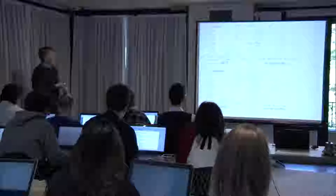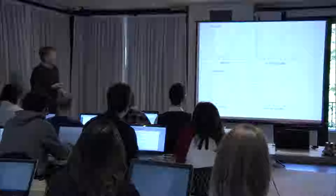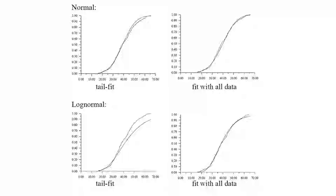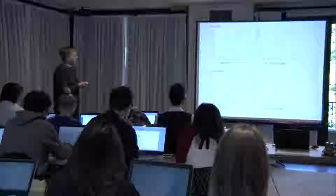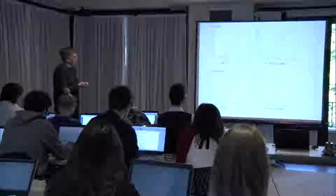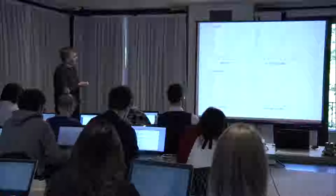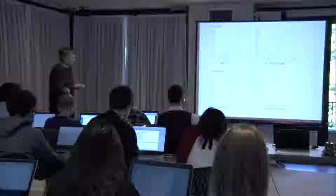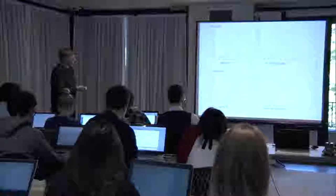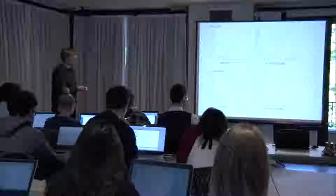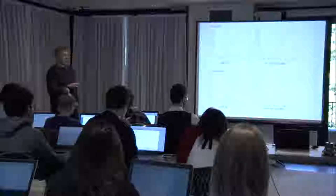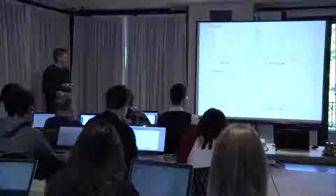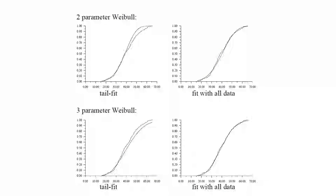The results show that the normal distribution gives a reasonable overall fit. Fitting only the lower tail gives a slightly better fit in that region but worse in the upper part. For the lognormal distribution, the lower tail fit is quite good but the upper part fits poorly — which is not important since large strength values are of no interest for structural reliability.